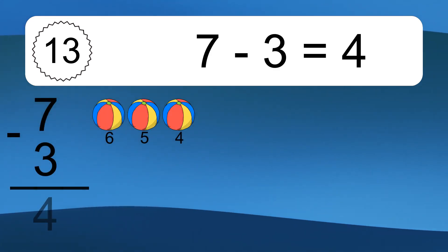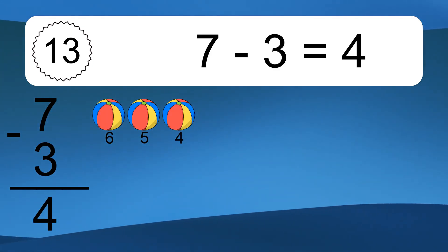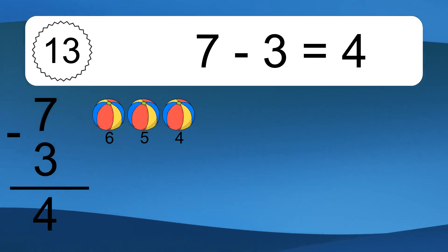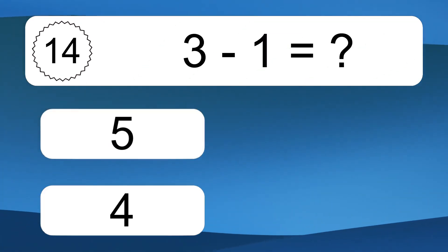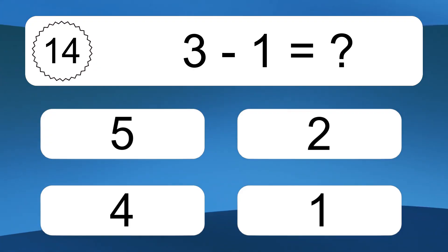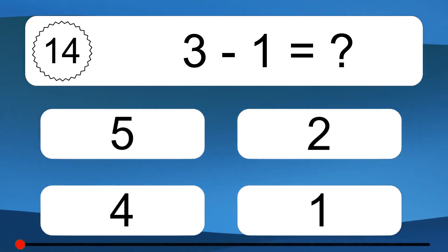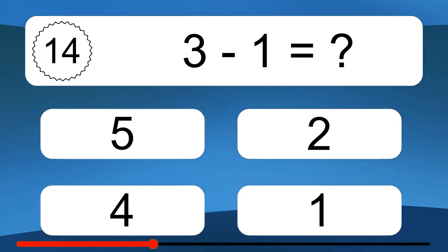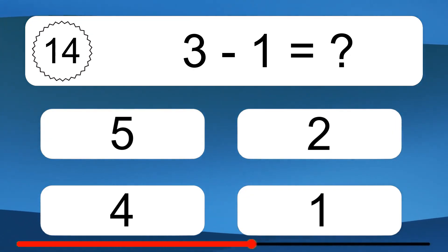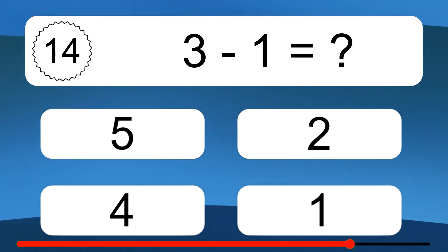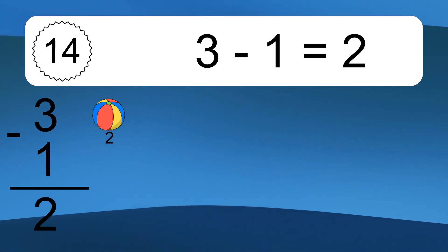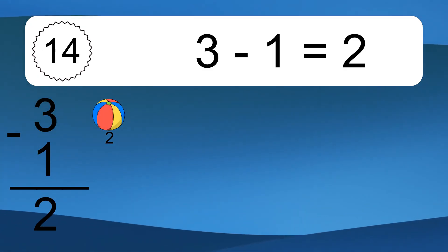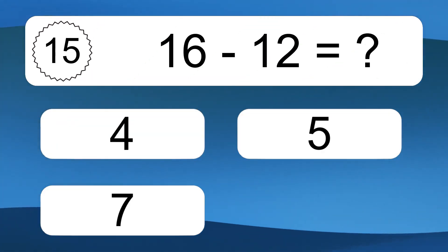7 minus 3 equals what? 7 minus 3 equals 4. Let's count it: 6, 5, 4. 3 minus 1 equals what? 3 minus 1 equals 2. Let's count it: 2.